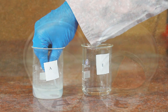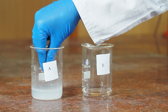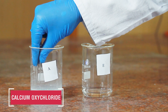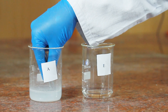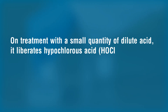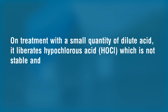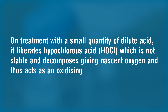When the cloth is dipped in beaker A, the bleaching powder (calcium oxochloride, Ca(OCl)₂), on treatment with a small quantity of dilute acid, liberates hypochlorous acid (HOCl), which is unstable and decomposes giving nascent oxygen, and thus acts as an oxidizing and bleaching agent.